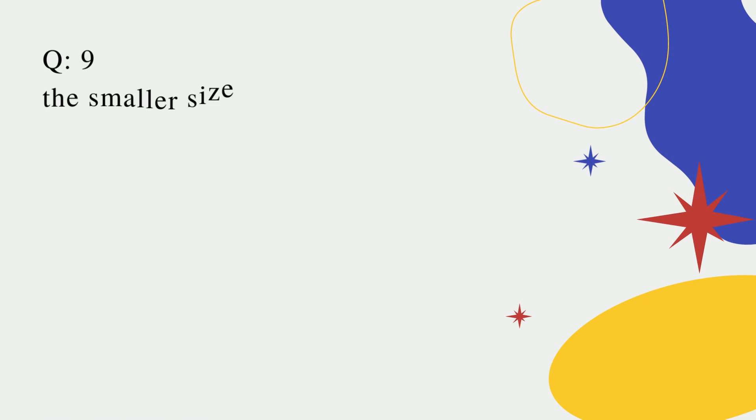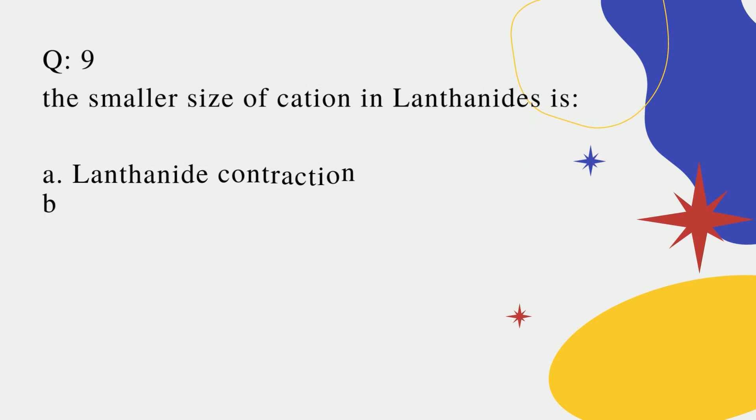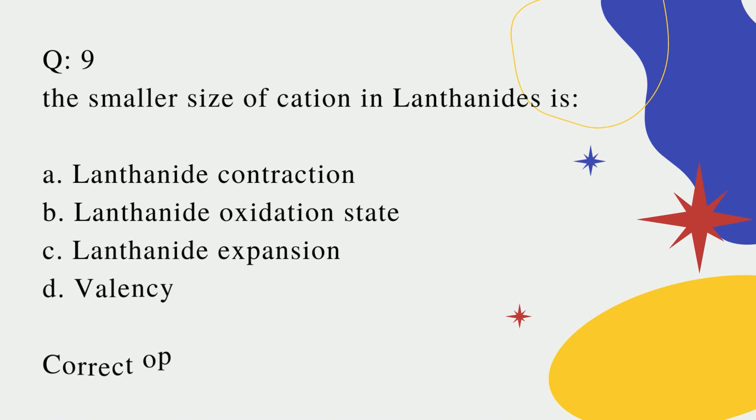Question number nine: The smaller size of cation in lanthanides is? A. Lanthanide contraction? B. Lanthanide oxidation state? C. Lanthanide expansion? D. Valency? Correct option is A.